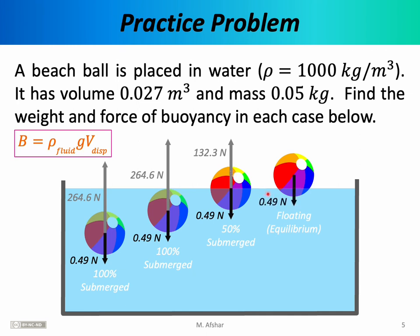In scenario four, weight is again 0.49 newtons. We don't know how much of the beach ball is underwater, so we can no longer directly calculate the buoyant force from the formula. However, we know the beach ball has finally reached equilibrium, meaning the net force is zero. So if weight is 0.49 newtons downward, the buoyant force must be 0.49 newtons upward.